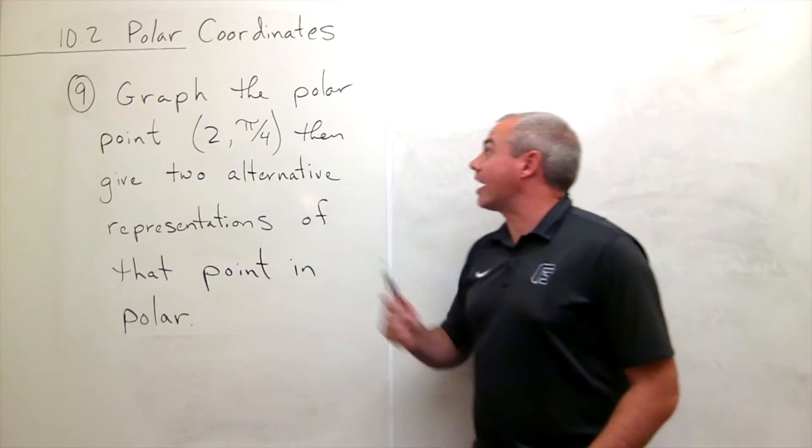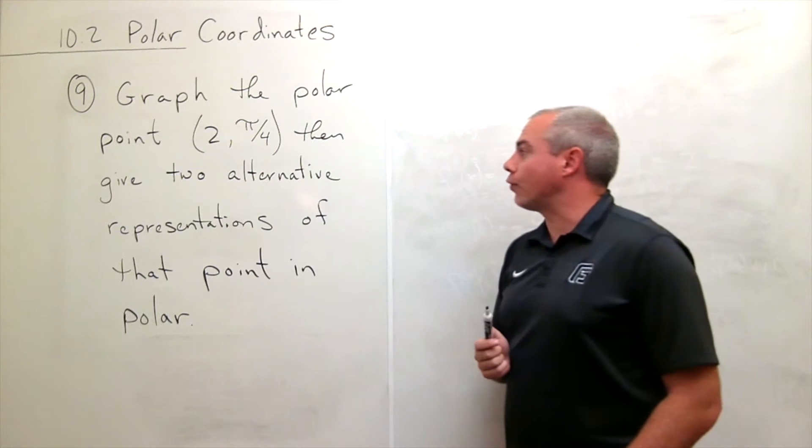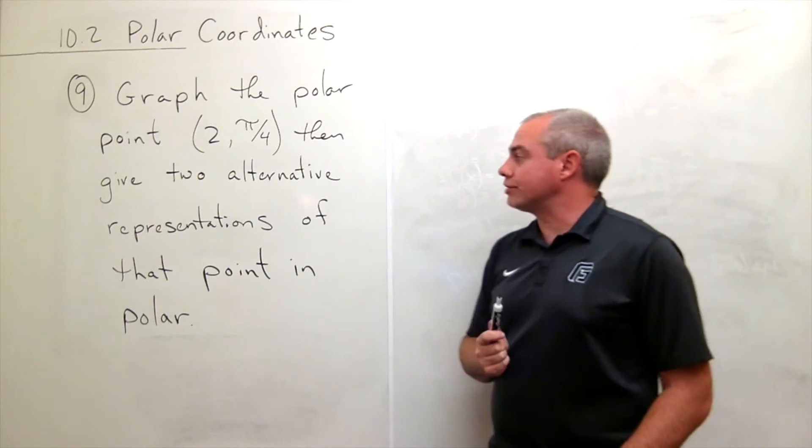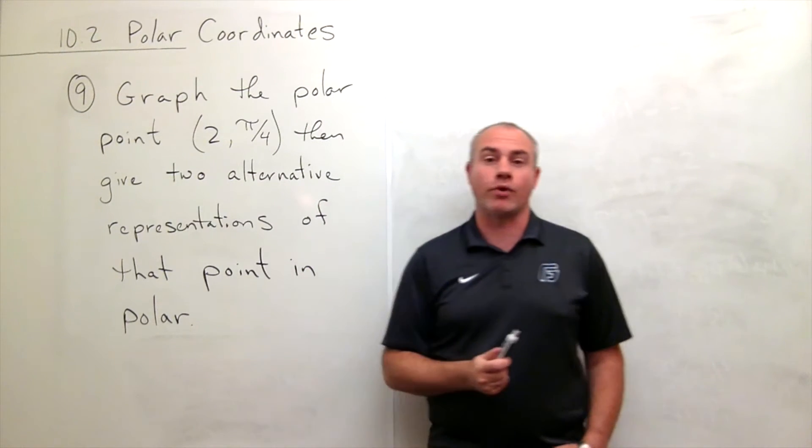In problem number nine, I'd like to graph the polar point (2, π/4) and then give two alternate representations of that point in polar.